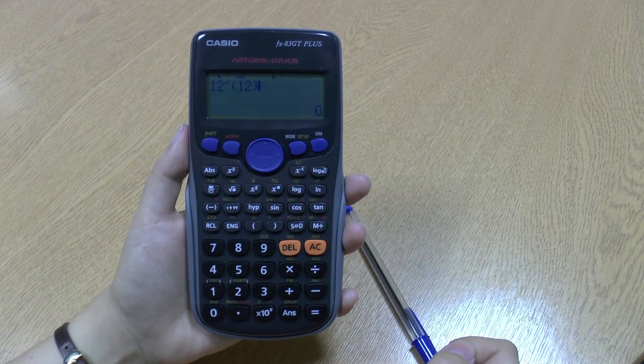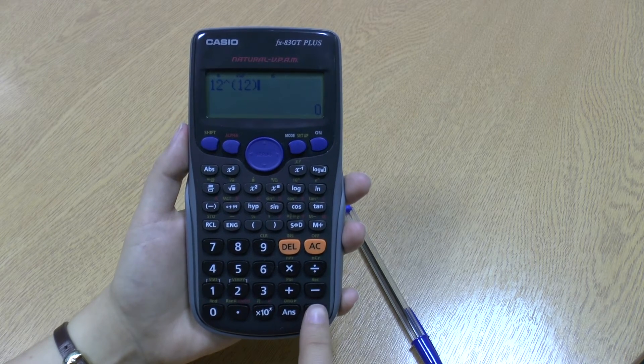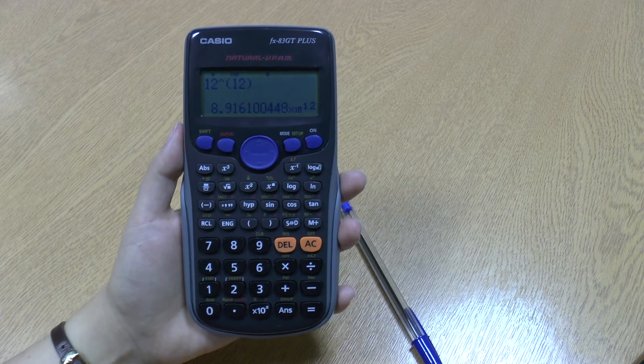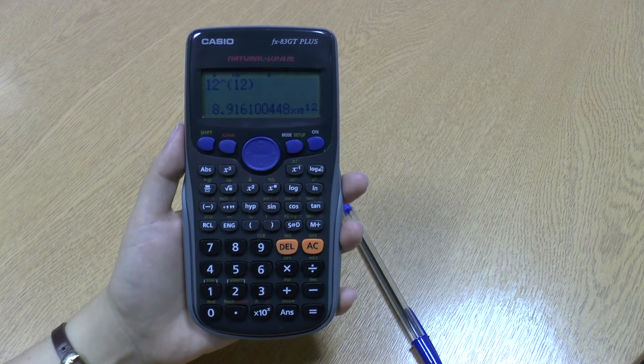So now I've got 12 to the power of 12 on my screen, equals, and look that's a really big number. You can tell because the calculator has put it in standard form.